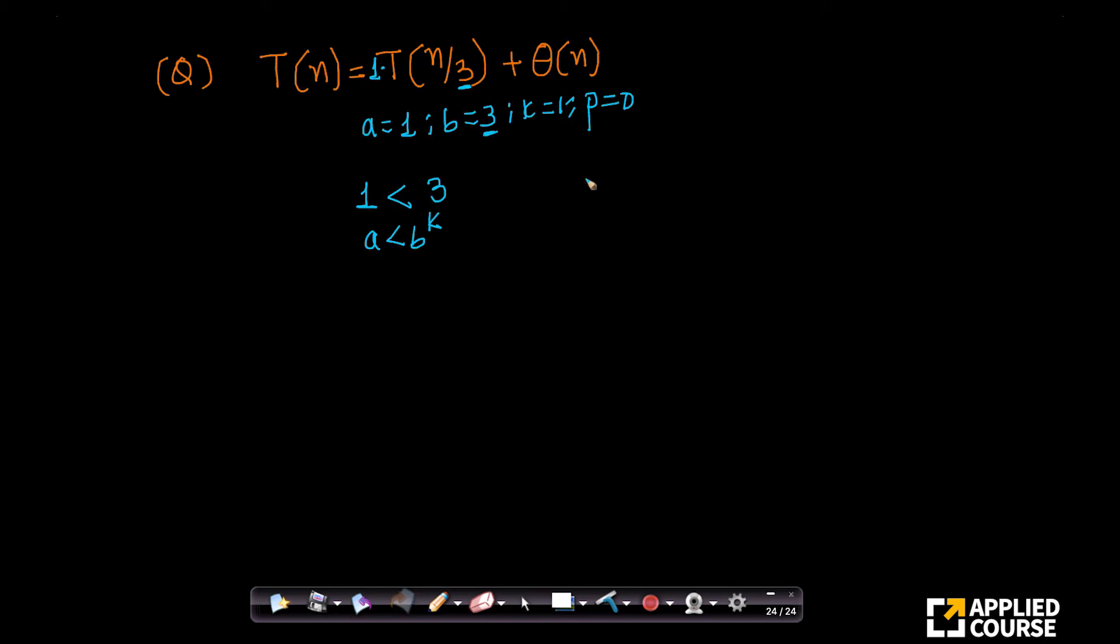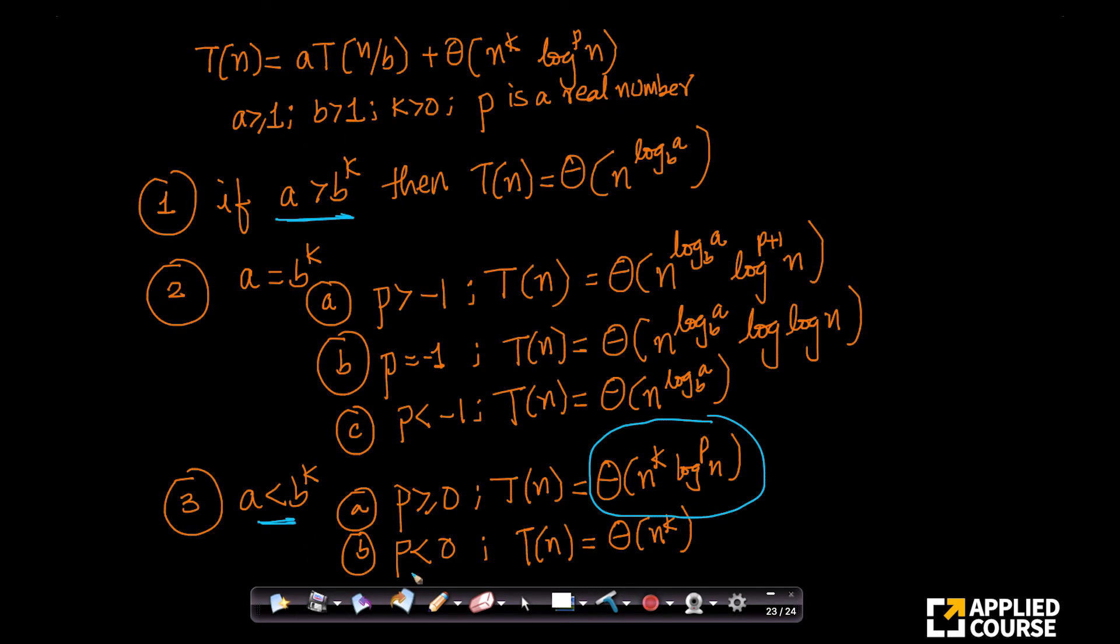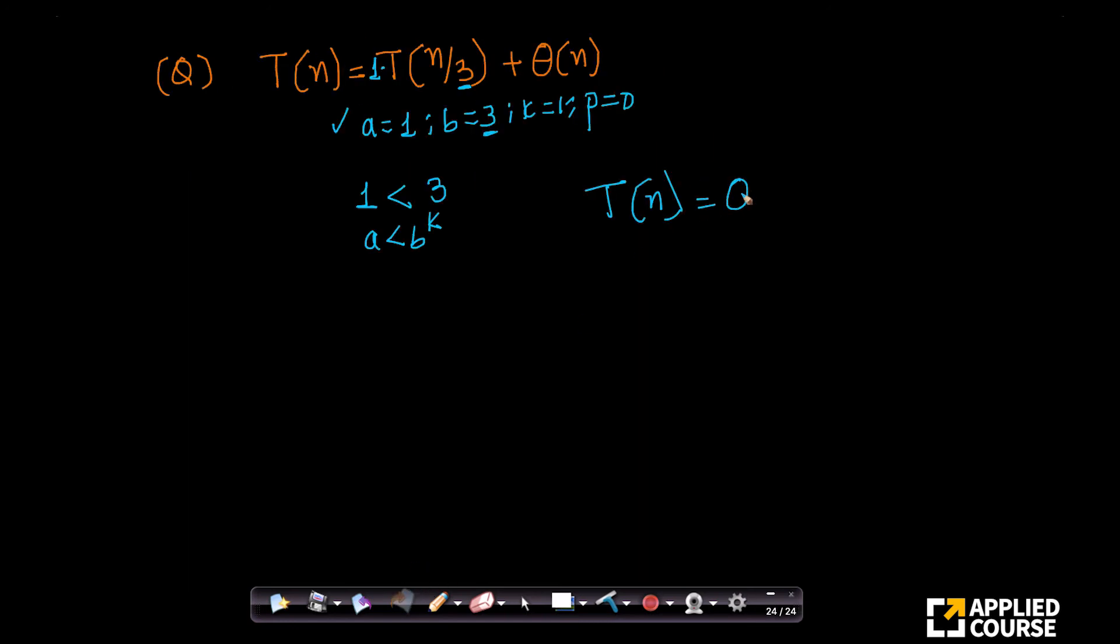What do we have here? My t of n. I just basically said given these values of A, B, k, p, which case does it fall in and what is my answer? My answer here should be theta of n power k. What is k? K is 1.